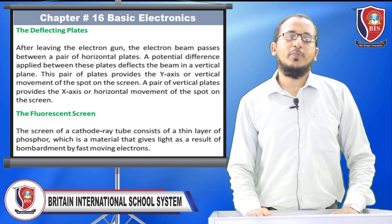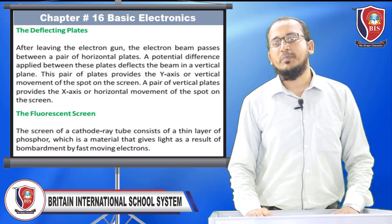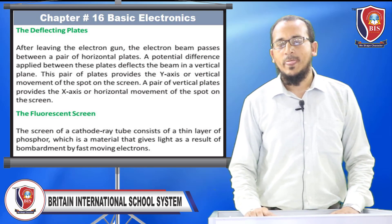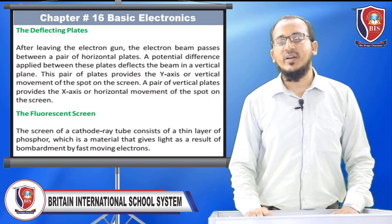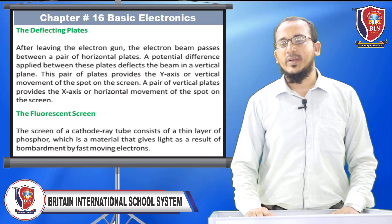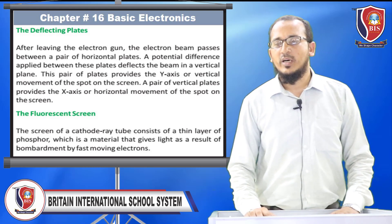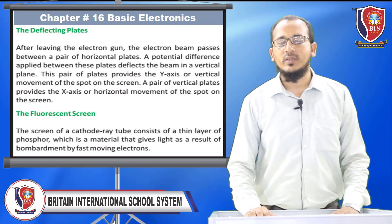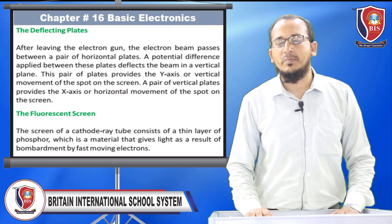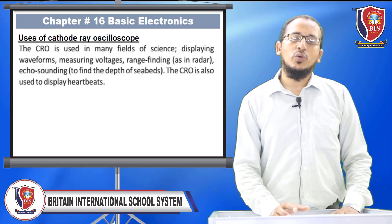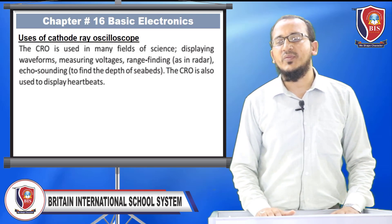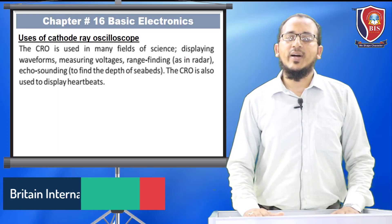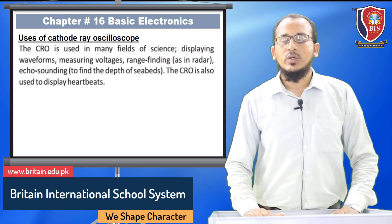After leaving the electron gun, the electron beam passes between a pair of horizontal plates. A potential difference applied between these plates deflects the beam in the vertical plane — this pair provides the Y-axis (vertical) movement of the spot on the screen. A pair of vertical plates provides the X-axis (horizontal) movement. The fluorescent screen consists of a thin layer of phosphor, a material that gives off light as a result of bombardment by fast-moving electrons. The CRO is used in many fields of science: displaying waveforms, measuring voltage, range finding as in radar, and echo sounding to find the depth of sea beds. It is also used to display heartbeats.